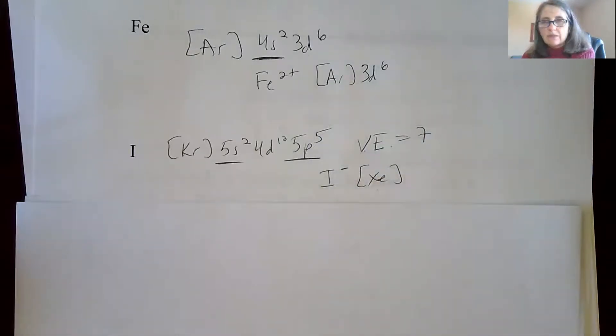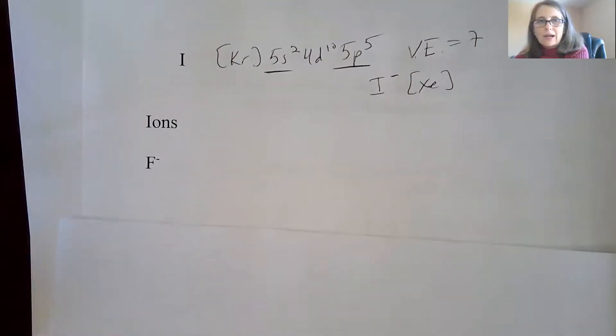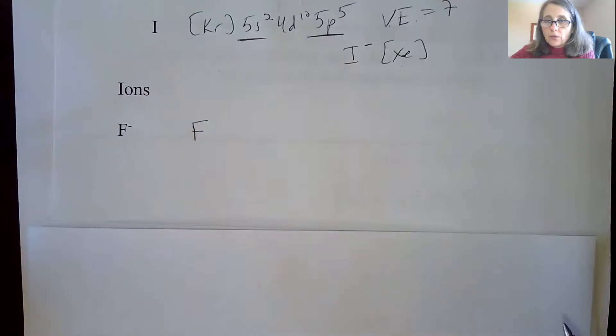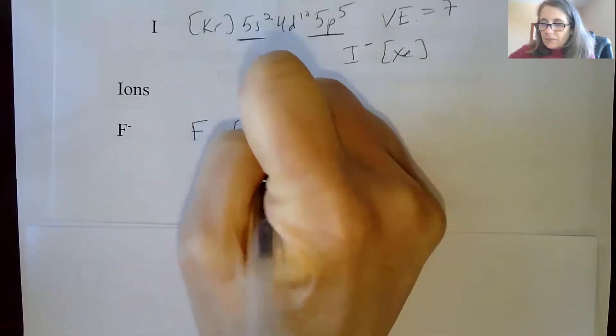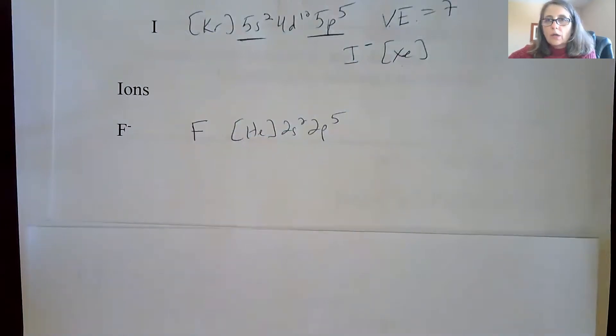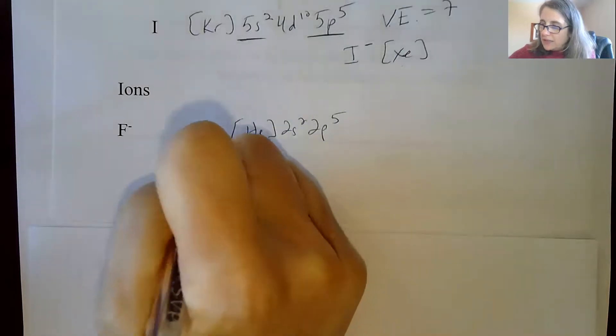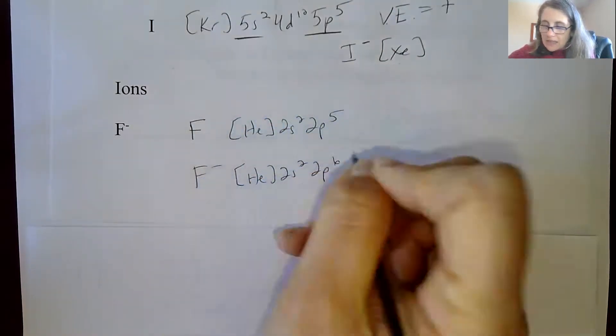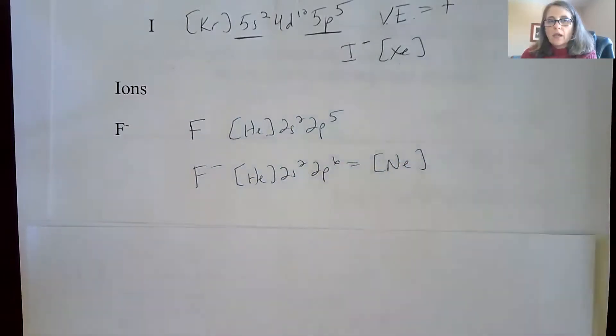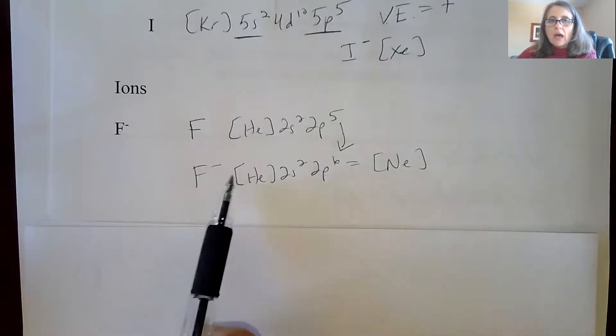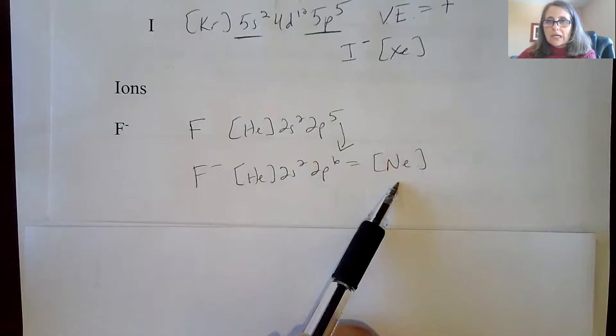A couple more ions to kind of reiterate or show you why the noble gas configuration is so very valuable. So if I look at F⁻, if I just write the electron configuration of fluorine, just normal fluorine, it would be helium. Again, that doesn't buy me much. And then it is 2s² 2p⁵. So what you're going to hopefully start to see the pattern is the fact that fluorine only wants one more electron to become a p⁶. So I could write its configuration as helium 2s² 2p⁶, or I could just call it neon. So I do sometimes like to show that just so you could see where the electron went, essentially, instead of just jumping to neon. But technically speaking, you could say it has the same configuration as neon because it does.